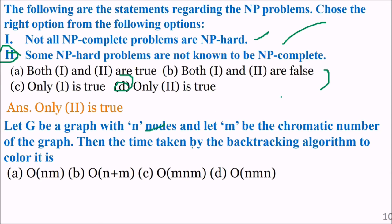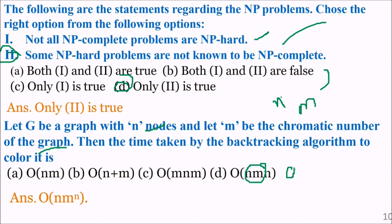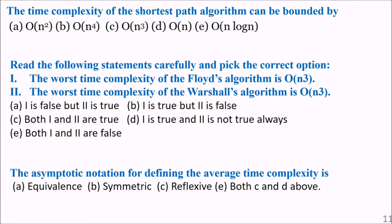Let g be a graph with n nodes and let m be the chromatic number of the graph. The total time taken by the backtracking algorithm to color the graph is order of n·m to the power n. The time complexity of the shortest path algorithm is bounded by order of n cubed.